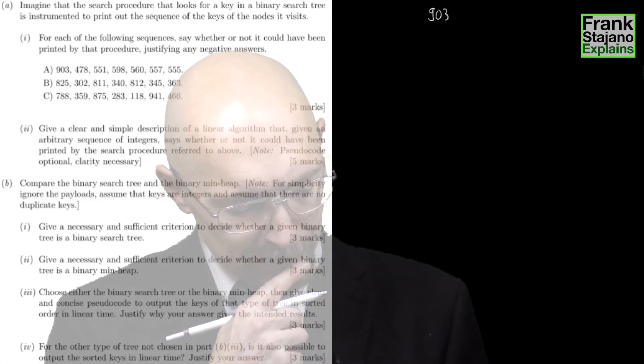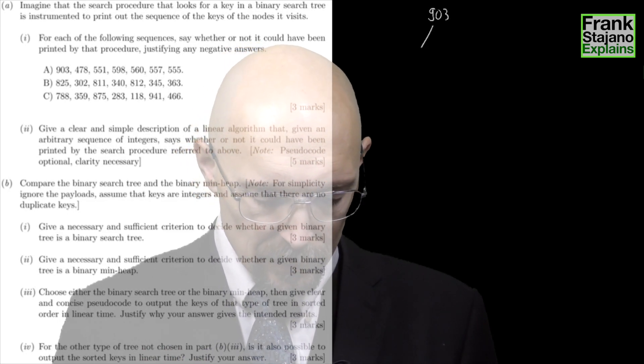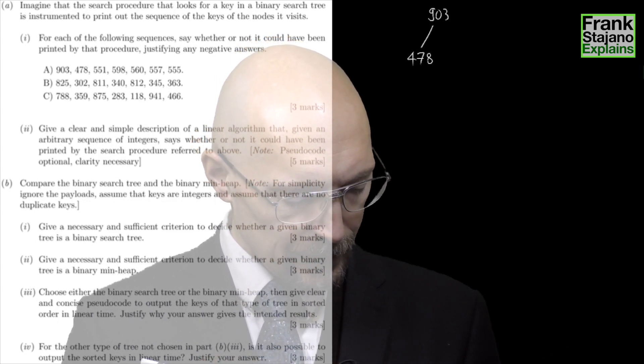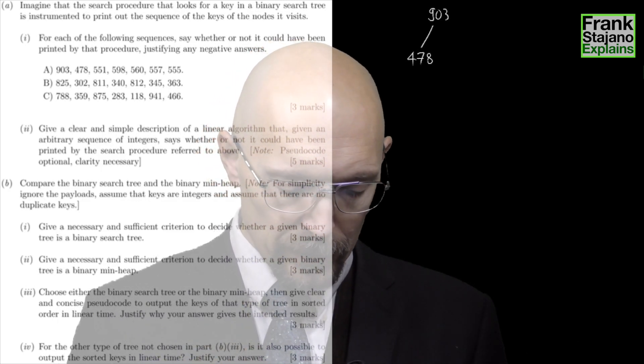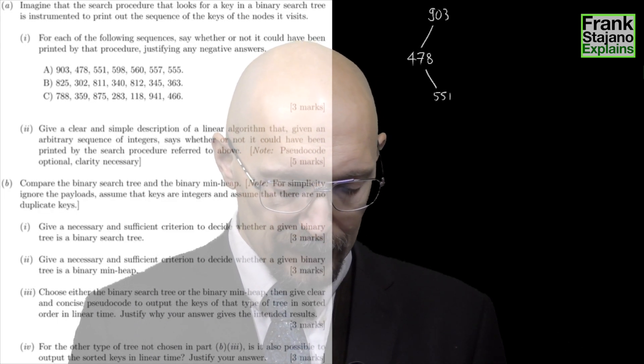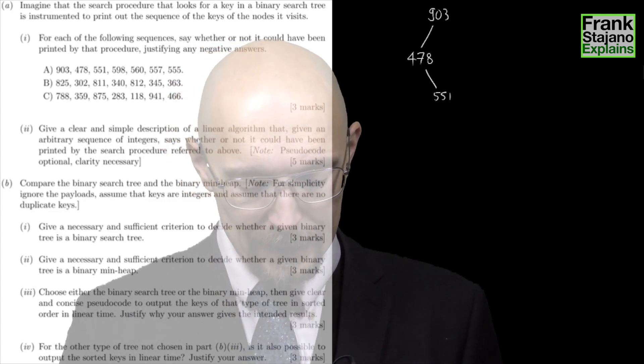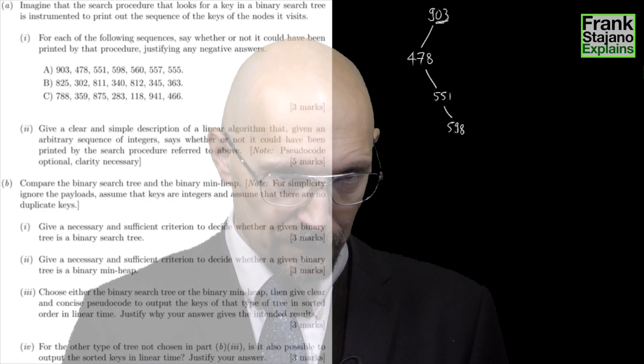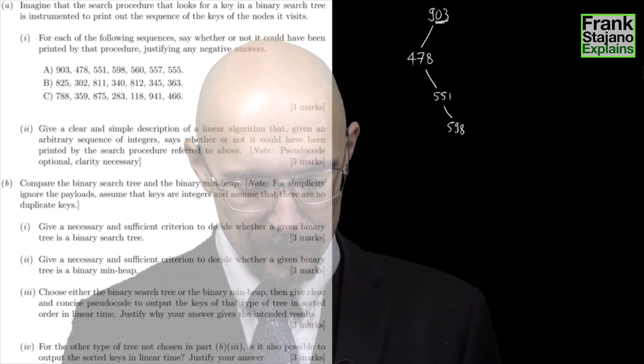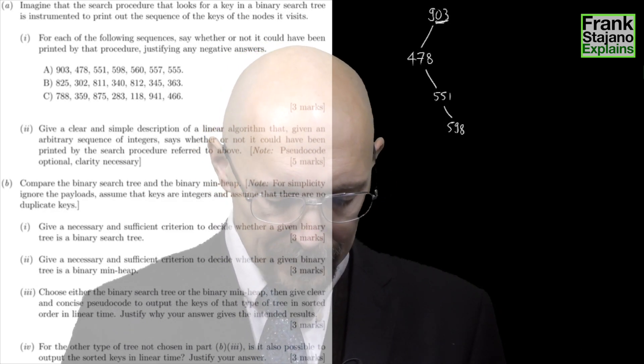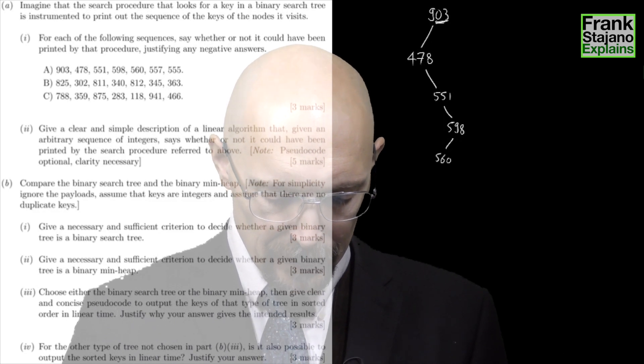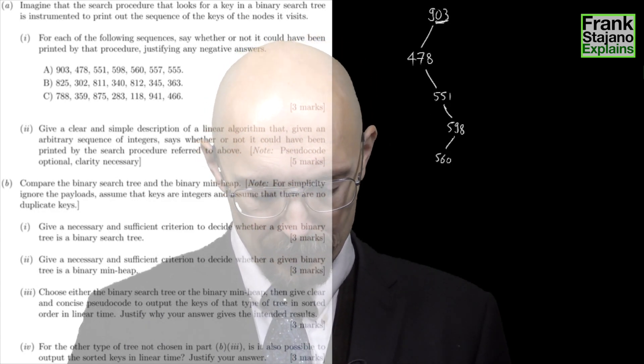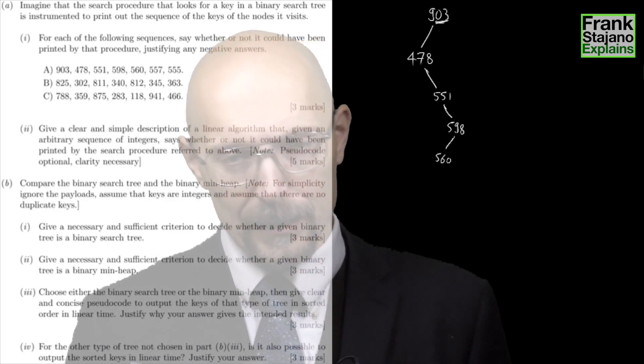Then it prints 478, which must have come from going into the left side of node 903. Then it prints 551 which must have come from going into the right side of node 478, which I notice happily is still within the left side of node 903 because it's smaller than that. Then I get 598 which must be the right hand side of 551 but fortunately still the left hand side of 903.